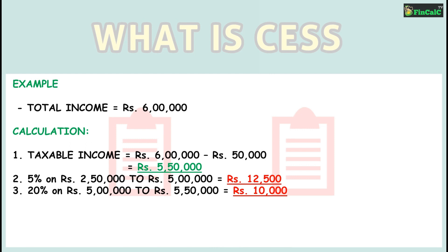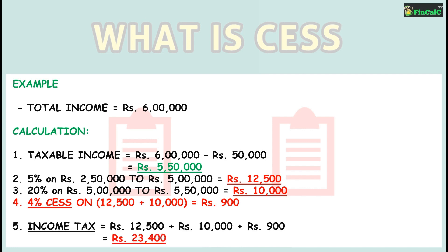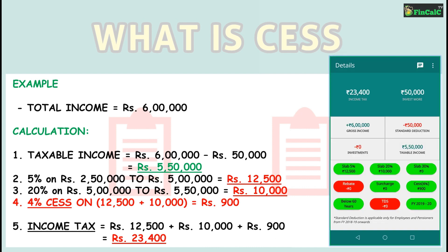The 30% tax slab is not applicable in this example, since the income is not above 10 lakhs. After calculating tax based on all slab rates, CES of 4% will be applicable on this income tax, which is equal to rupees 900, thus making your total income tax rupees 23,400.